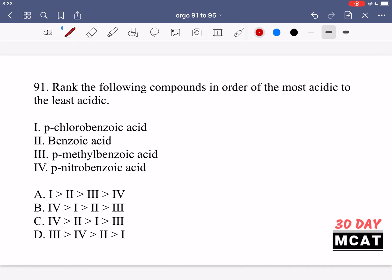In question 91 we were asked to rank the following compounds in order of the most acidic to least acidic. What we're talking about is they're all some form of variation on a benzoic acid.